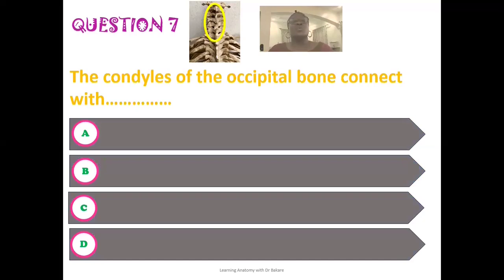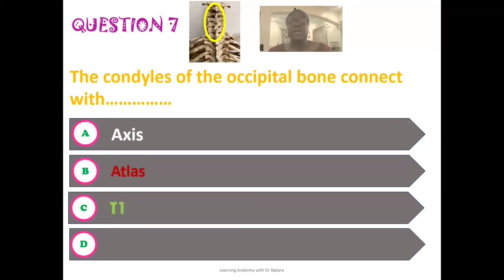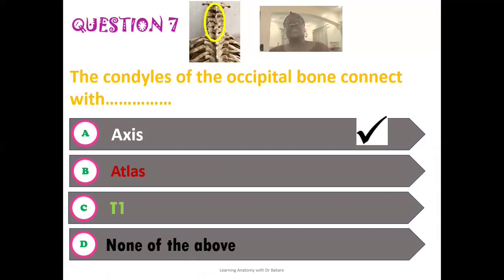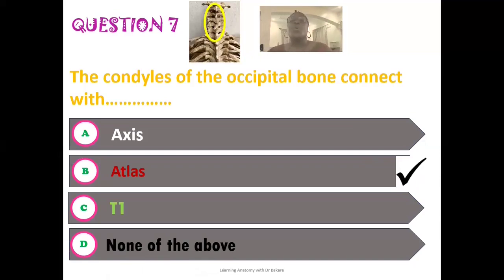The seventh question: the condyles of the occipital bone connect with which structure? Options are: the axis, the atlas, the first thoracic vertebra, or none of the above. The correct answer is the atlas. The atlas is the first cervical vertebra and forms the connection point with the occipital bone at the atlanto-occipital joint.